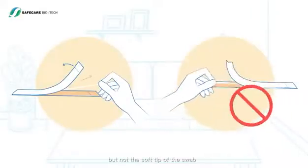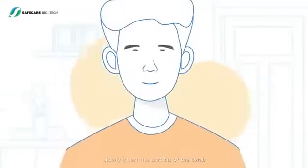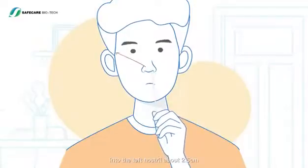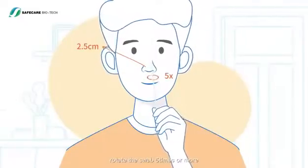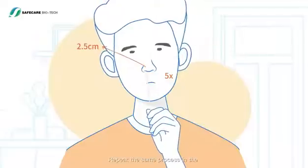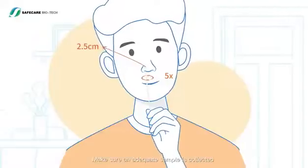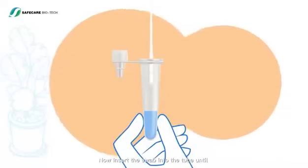Taking the sample: slightly tilt your head backwards. Slowly insert the soft tip of the swab into the left nostril about 2.5 centimeters. Firmly brush against the inside of the nostril and rotate the swab five times or more. Repeat the same process in the other nostril using the same swab. Make sure an adequate sample is collected.